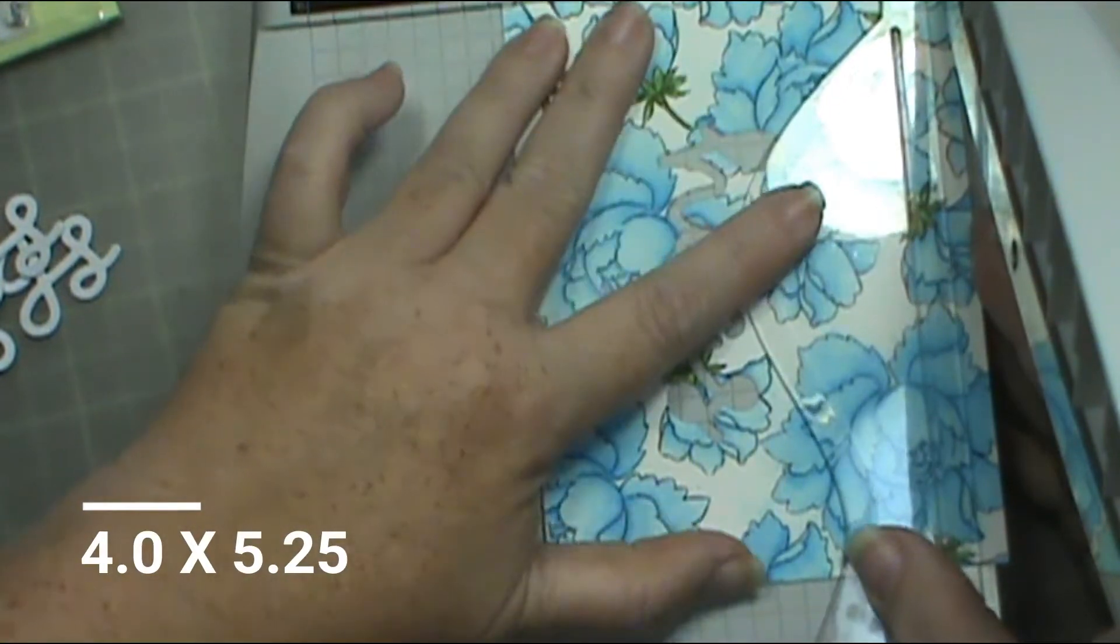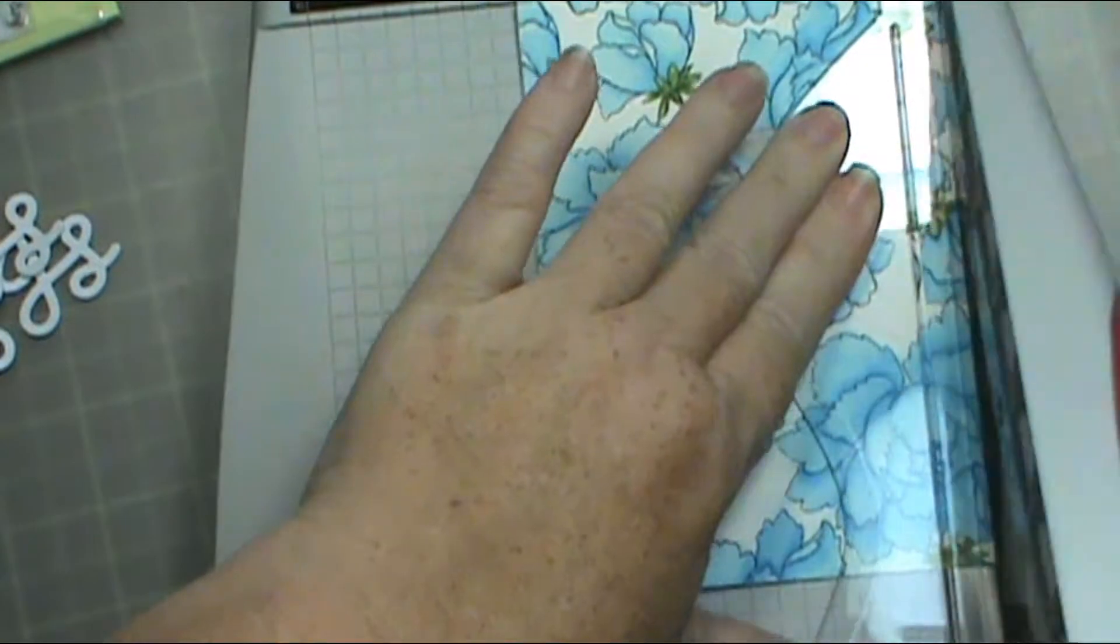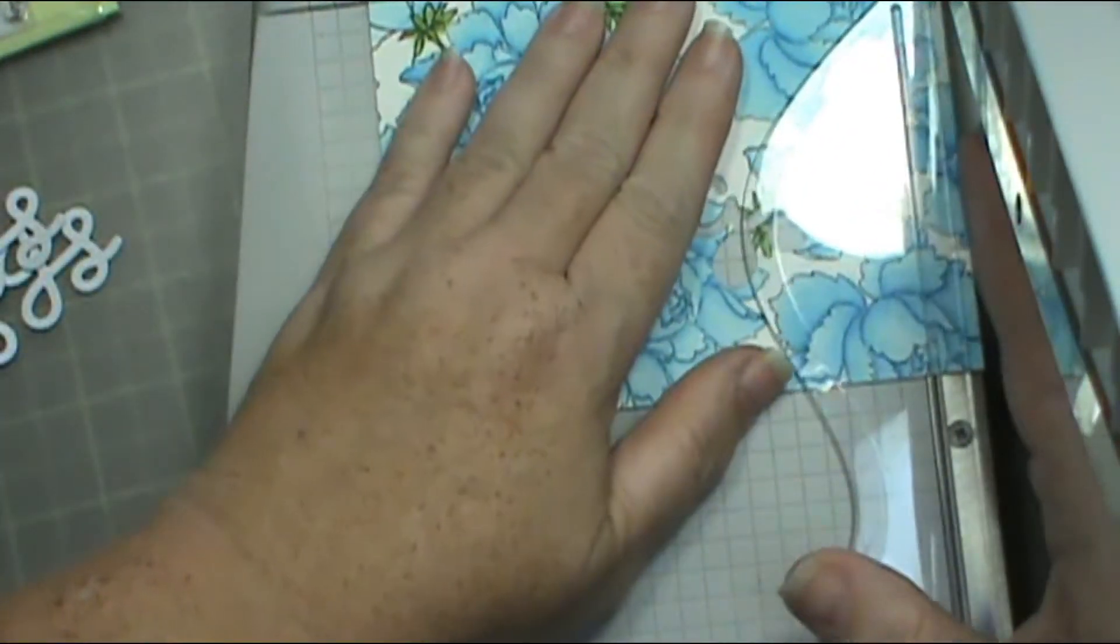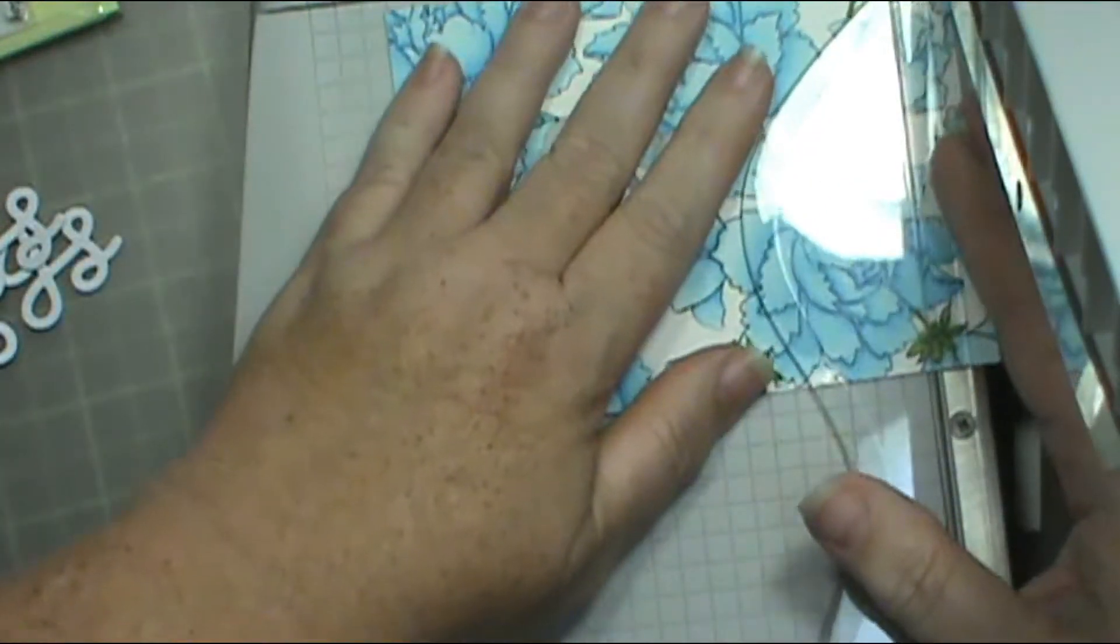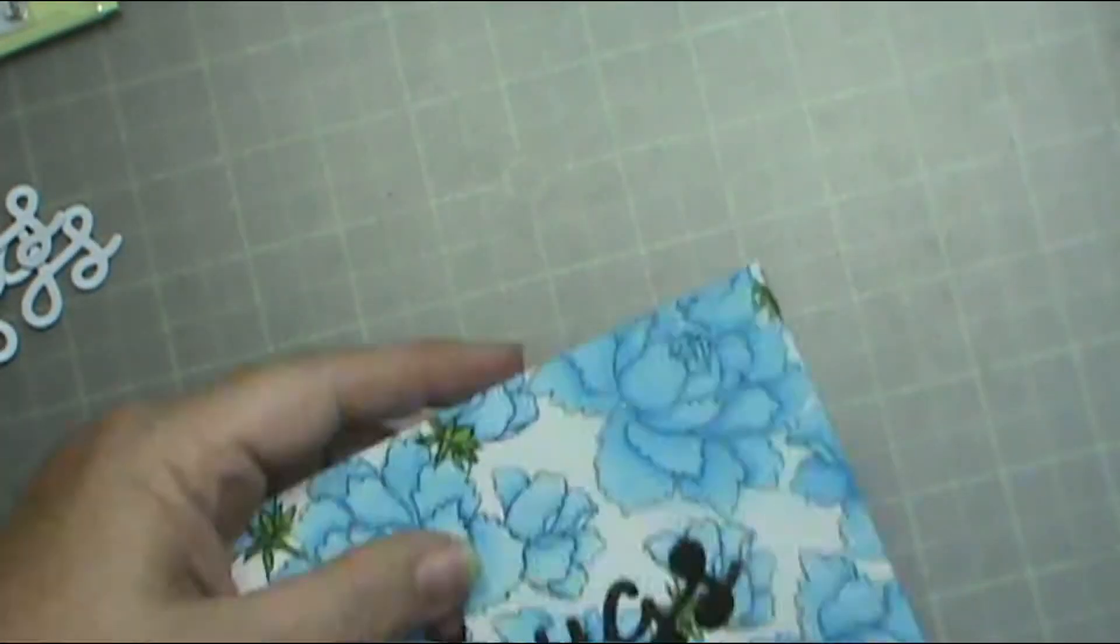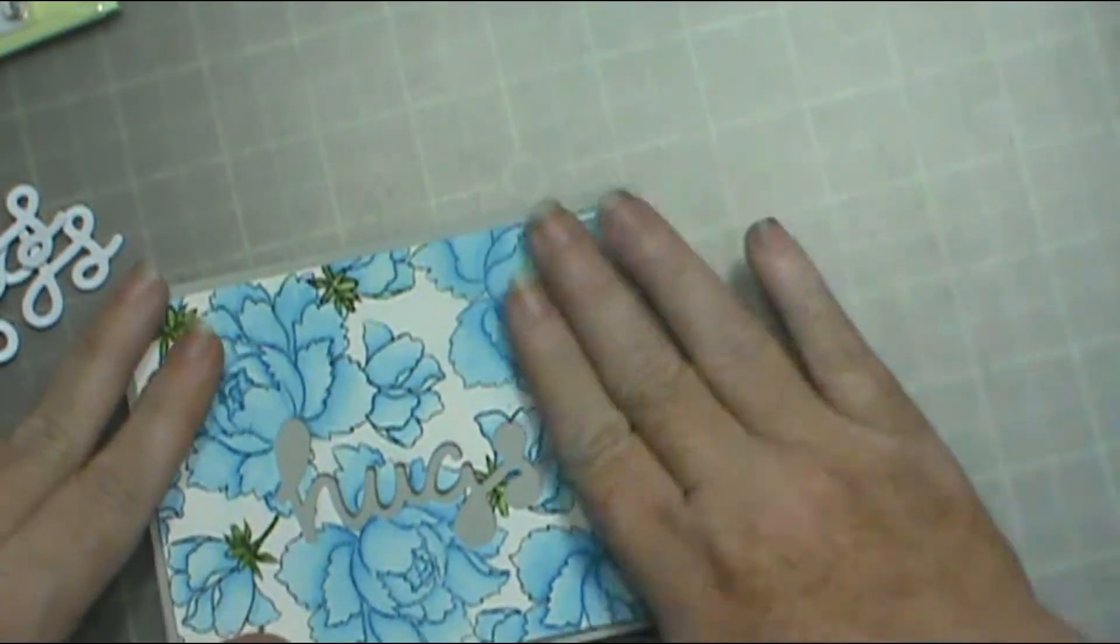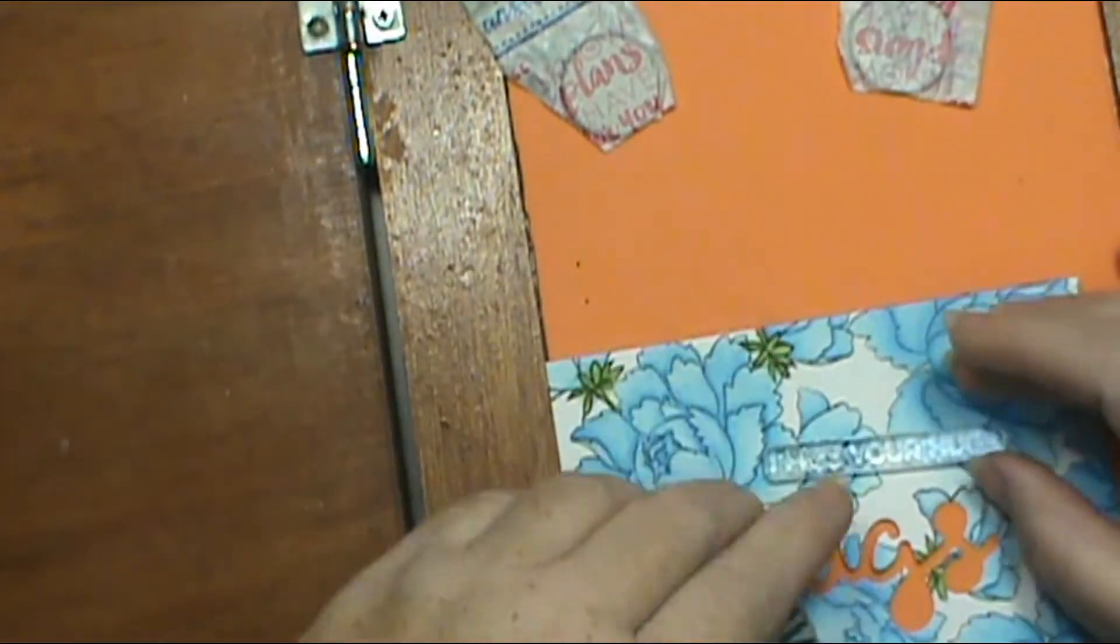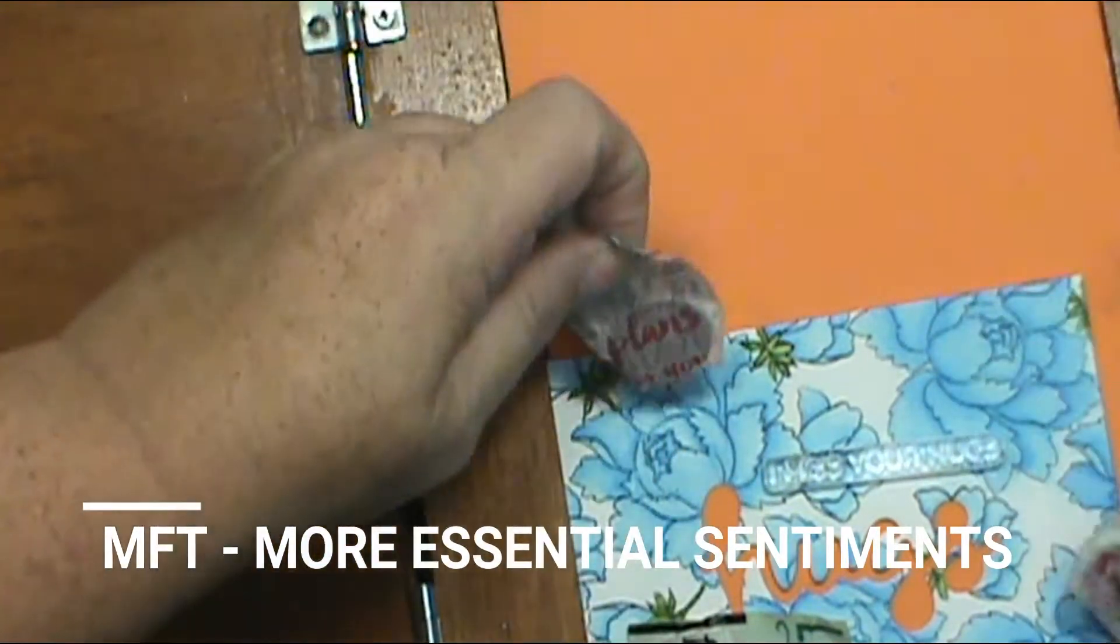Here I'm just trimming this down to four by five and a quarter and trying to get it straight because I wasn't paying attention. Then I'm going to take an eighth of an inch off on each side to get my quarter inch so that the word is still centered. I got my gray Recollections 110 pound card stock and turned it into an A2 size card front.